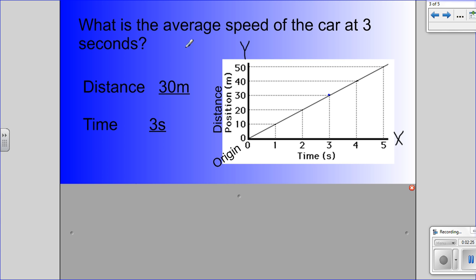The question being asked is what is the average speed of the car at 3 seconds? Well, we look at 3 seconds here. Go up, make a little point on our line, and then follow it over. You see the distance is 30 meters.